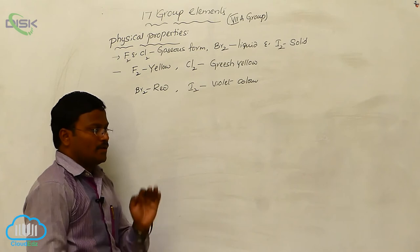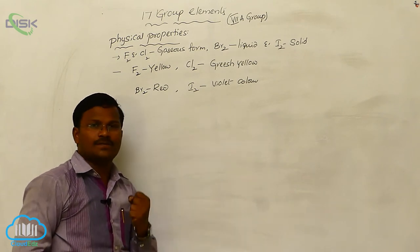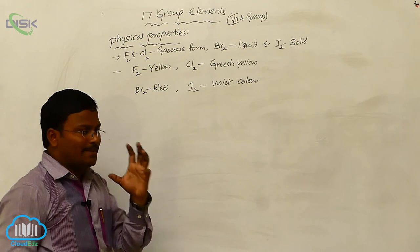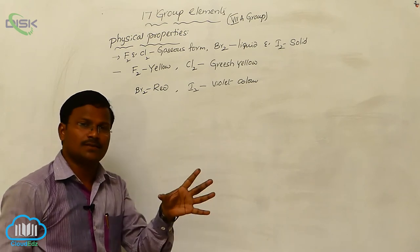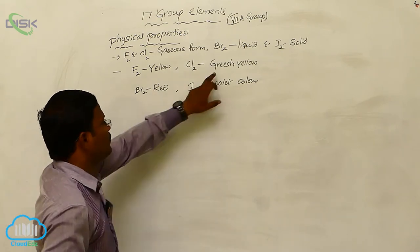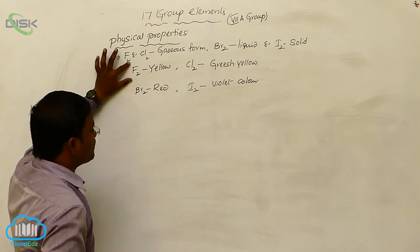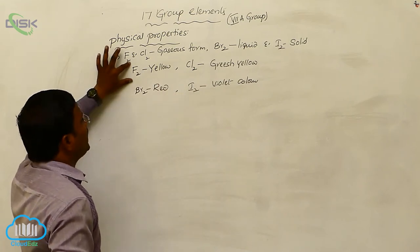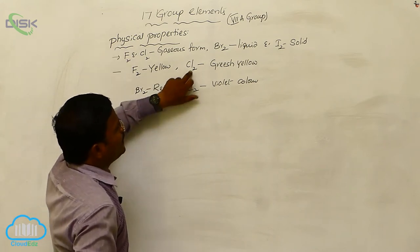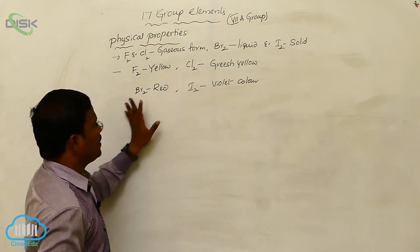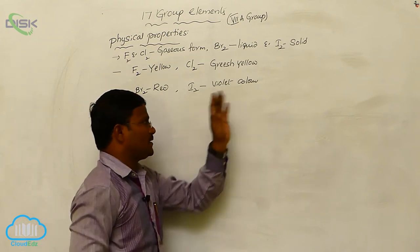These halogens are going to absorb all types of wavelengths present in visible light, but emit only the desired wavelength of light. Hence, due to this mechanism, fluorine appears as yellow color gas, chlorine as greenish yellow, bromine as red color, and iodine will exhibit violet color.